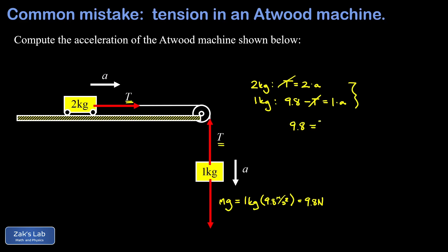And then on the right side, I get 3A. And now we divide by three. And we find that A is 3.27 meters per second squared.